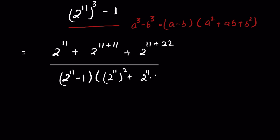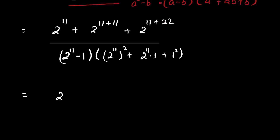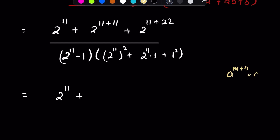There is another identity: a^(m+n) = a^m × a^n. Applying this to the numerator terms, 2^(11+11) = 2¹¹ × 2¹¹ and 2^(11+22) = 2¹¹ × 2²², so the numerator becomes 2¹¹ × 2¹¹ + 2¹¹ × 2²².